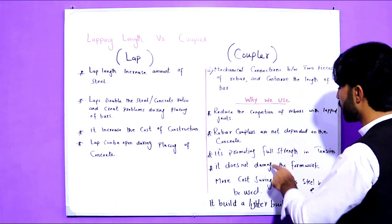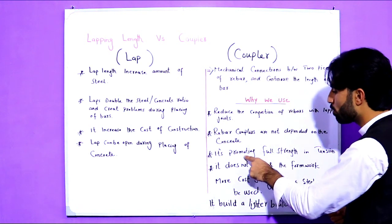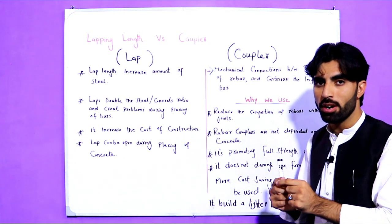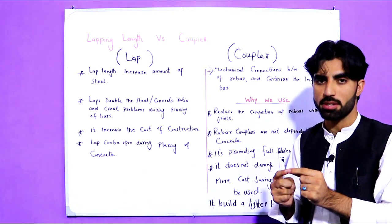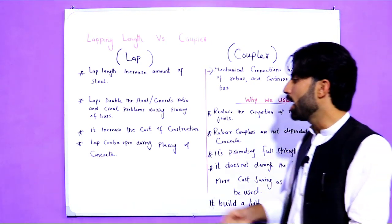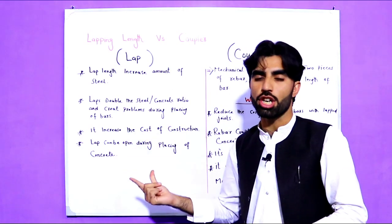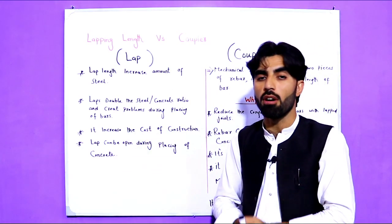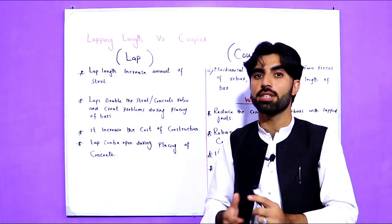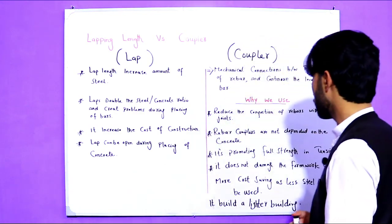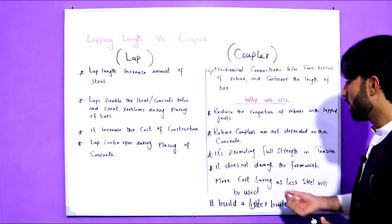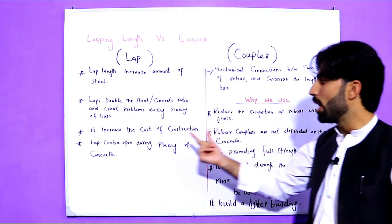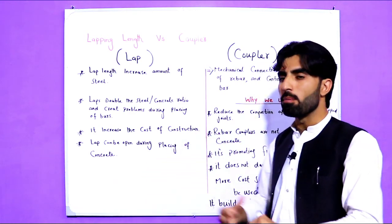Coupler promotes full strength in tension when you are connecting two joints of steel rebars. But lapping cannot give full strength because, as discussed, it can open during vibration of formwork or during placing of steel or concrete. The other advantage of coupler is that it does not damage the formwork, whereas lapping length can damage the formwork.